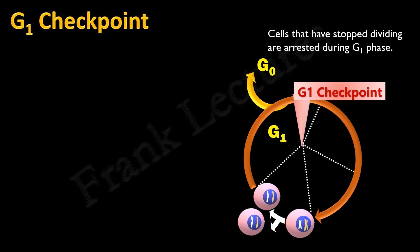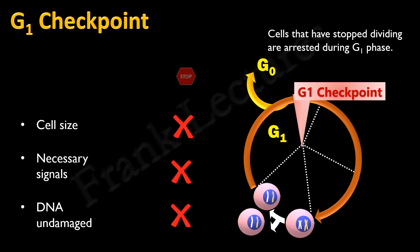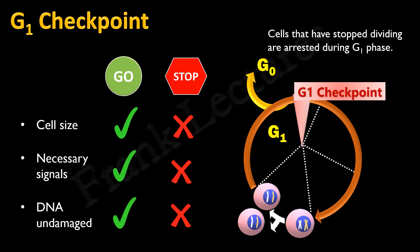A cell will continue through the cell cycle only if it has prepared itself for the next phase. So at this checkpoint following factors are checked for accuracy: the cell must attain a proper size, the cell must receive necessary signals, DNA should be undamaged. If these factors are not met, cell cycle stops until these conditions are fulfilled. Otherwise cell undergoes programmed cell death or apoptosis. If a cell successfully passes this checkpoint, the cell is committed to the next phase, that is the S phase.